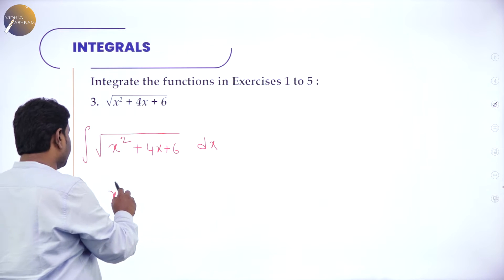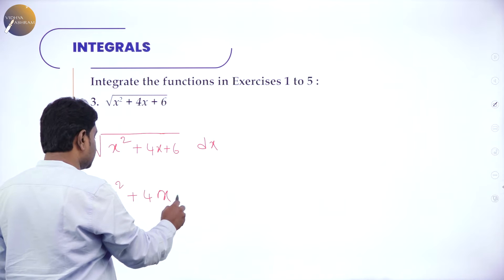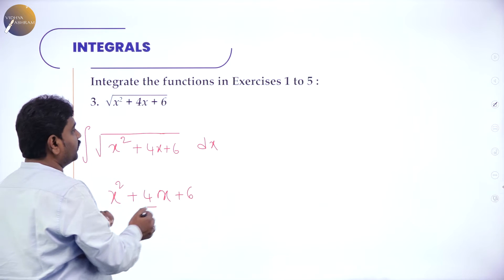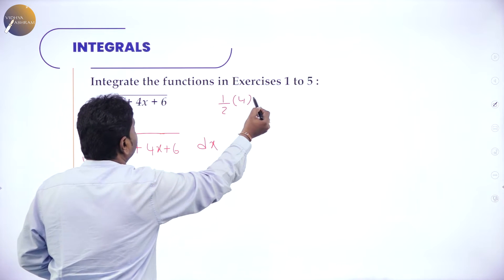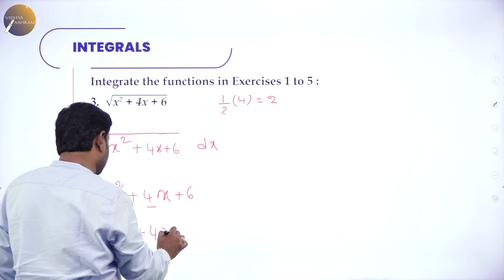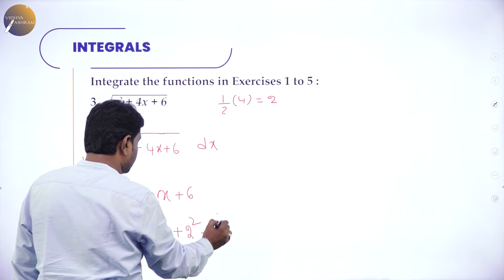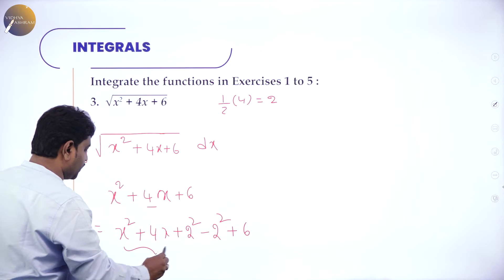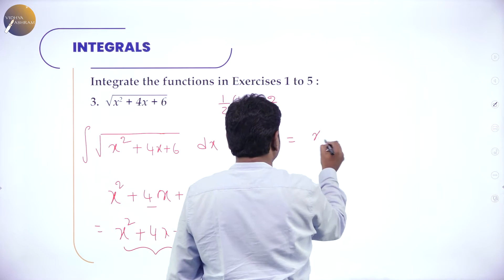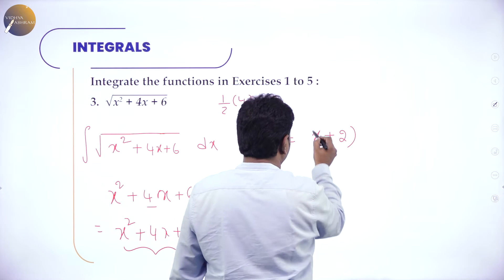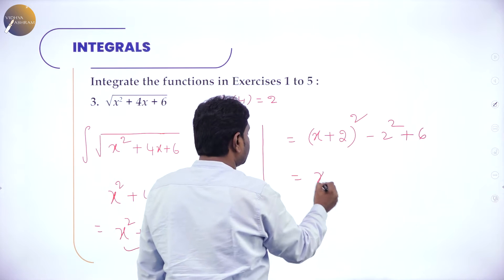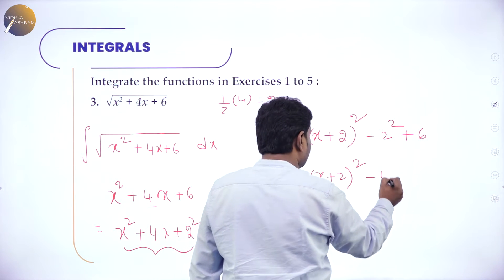Take the quadratic x² + 4x + 6 and add and subtract half the coefficient of x, the whole square. The coefficient of x is 4; half of 4 is 2. So add and subtract 2²: it becomes x² + 4x + 2² - 2² + 6. The first three terms form (x+2)², giving (x+2)² - 4 + 6.